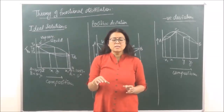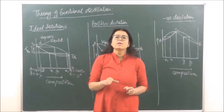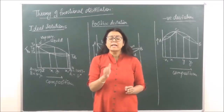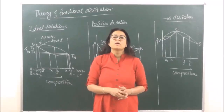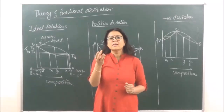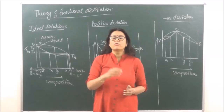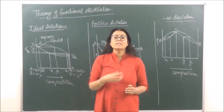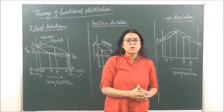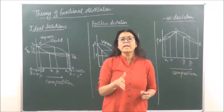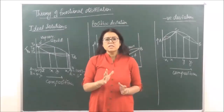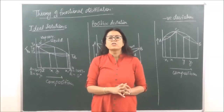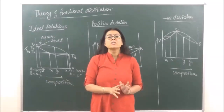Through the Liebig condenser, which you have done in your junior classes in class 11, that condenser helps us to separate both the components of a mixture. Now if there is very little difference between the boiling points of the two liquids, then simple distillation does not work. So we have to take into consideration a more sophisticated kind of distillation which is known as fractional distillation.